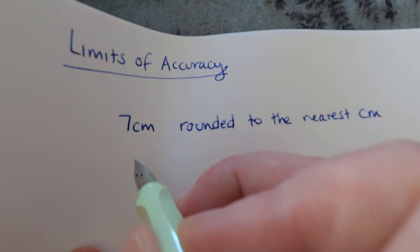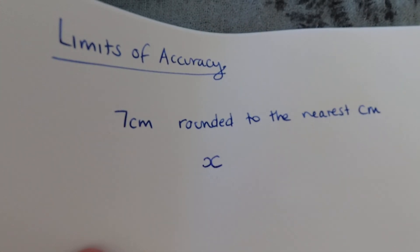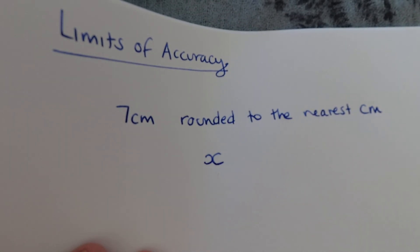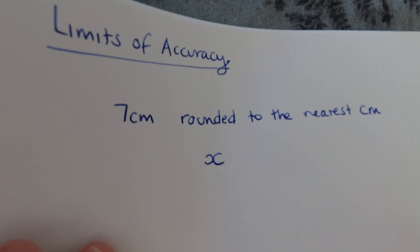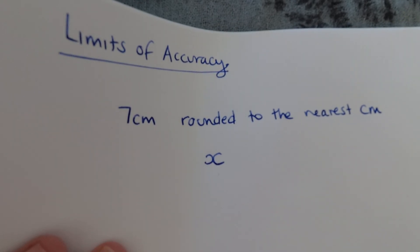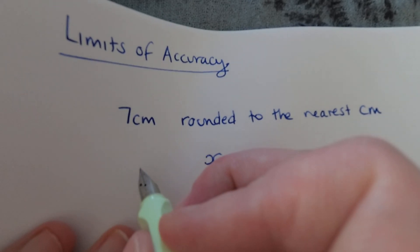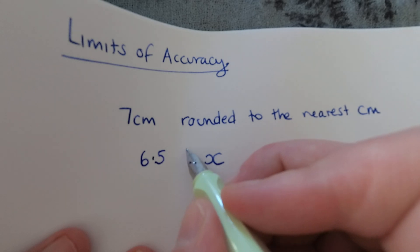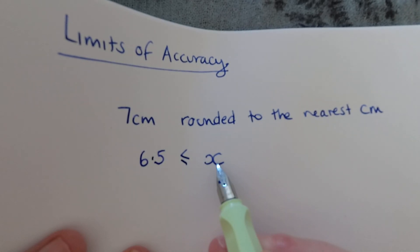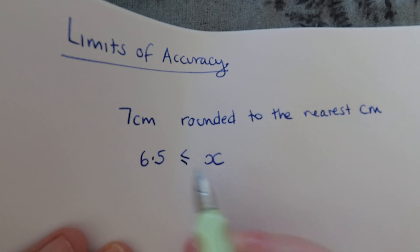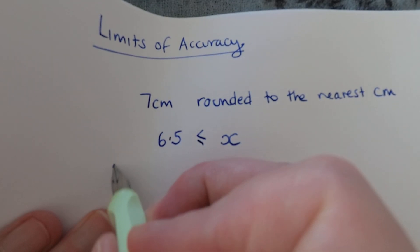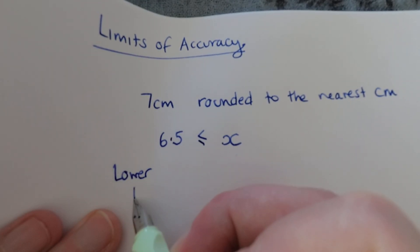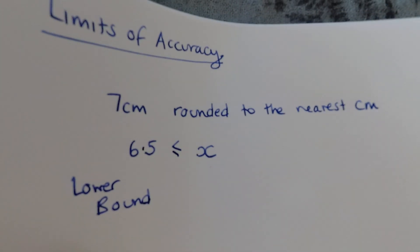So we're going to call our true value x. We know that the smallest amount it could have been is the smallest value that would round up to 7. Well, if it was 6.4 it would round down to 6, so the smallest value that would round up to 7 is 6.5. So we say that because this value could have been 6.5 and this is the smallest value, this is our lower bound of the true value of the measurement.